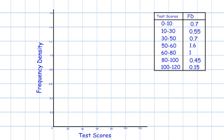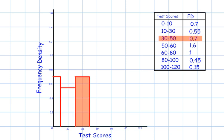Now I need to draw a bar from 0 to 10 with a height of 0.7. From 10 to 30 will be 0.55. From 30 to 50 will be 0.7. And from 50 to 60 is 1.6. 60 to 80 has a height of 1. 80 to 100 is 0.45. And from 100 to 120 is 0.15.